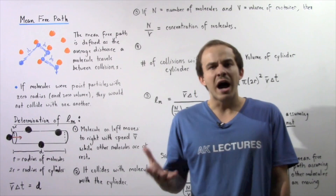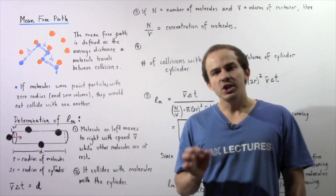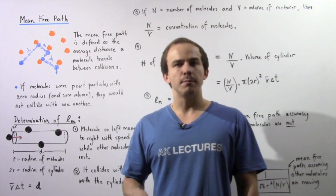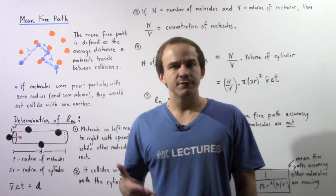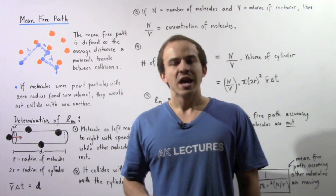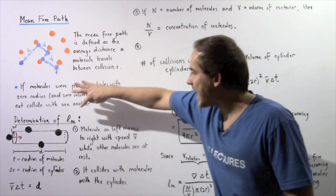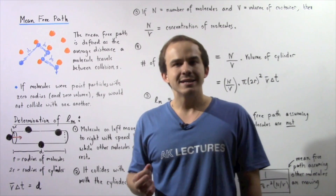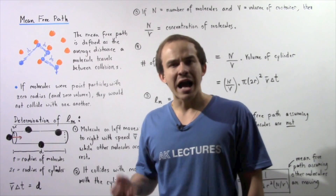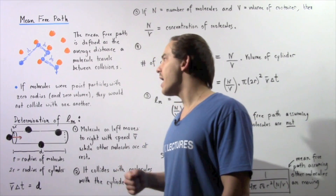That's because if they have no volume, then molecules are invisible to one another. But we know this is not actually true, because collisions on the subatomic level between two or more different molecules or atoms do in fact take place. And we define something called the mean free path, given by L with the M subscript, as the average distance that a molecule or atom travels before it makes a collision with another atom or molecule.